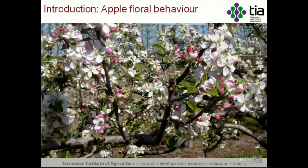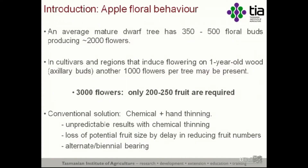The floral behavior of Apple trees, certainly in commercial and modern production systems, is such that they produce many flowers and many fruit, far in excess of what is required for commercial production or the production of high-quality fruit. In a normal production system, dwarf Apple trees produce an excess of 350 flower buds in mature trees, which equates to around about 2,000 flowers. In regions and genotypes where flowering occurs on one-year-old wood, there can be an additional 1,000 flowers, giving us a situation of 3,000 flowers on a tree.